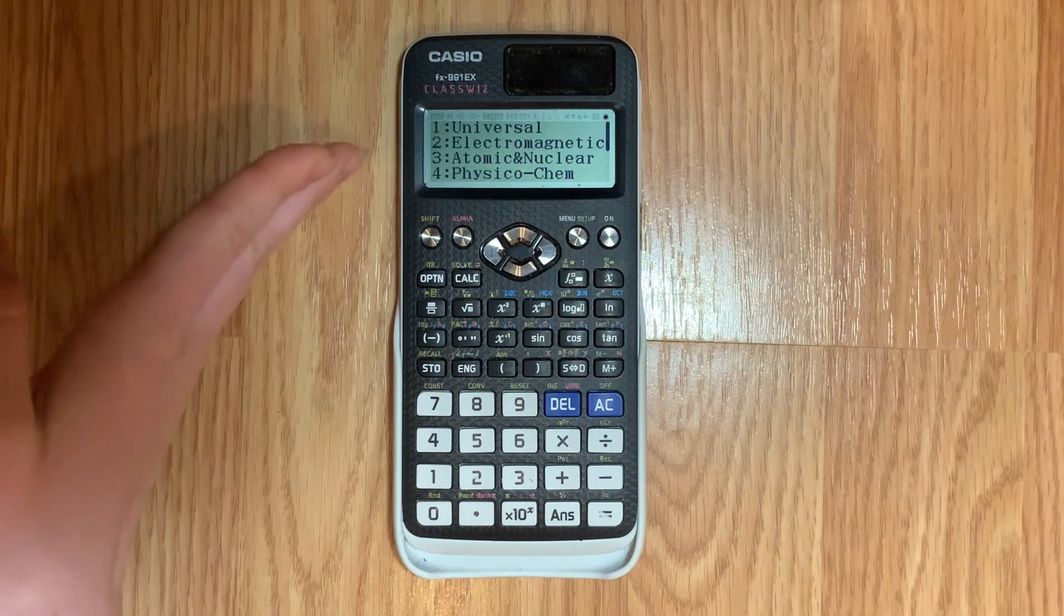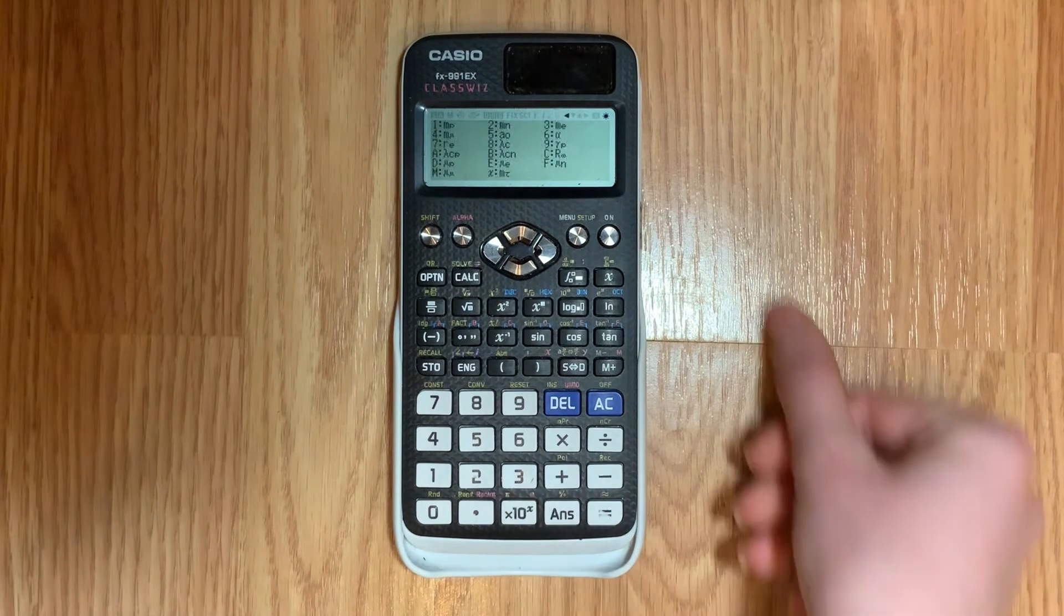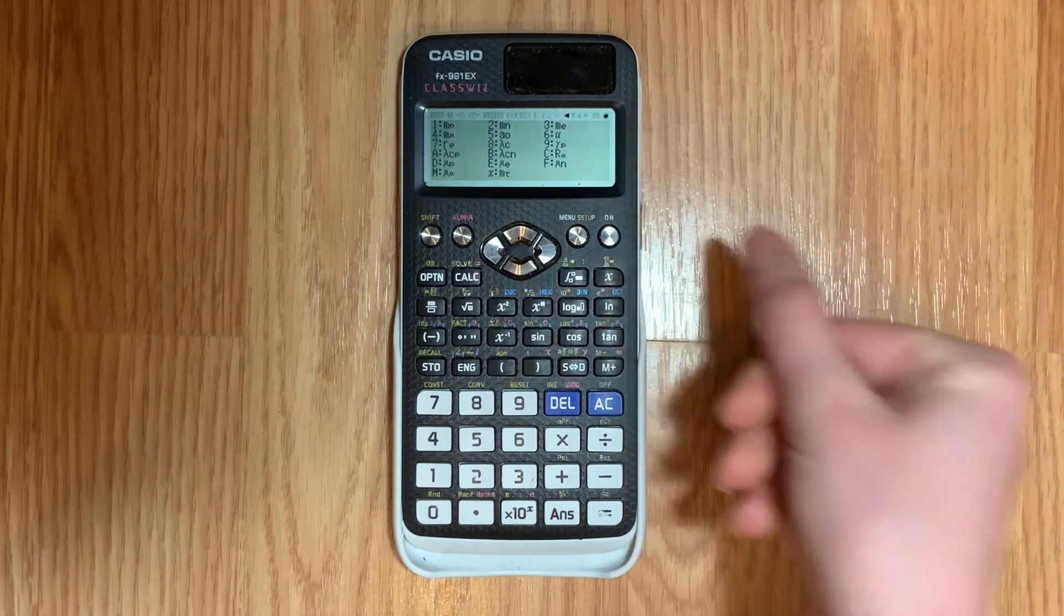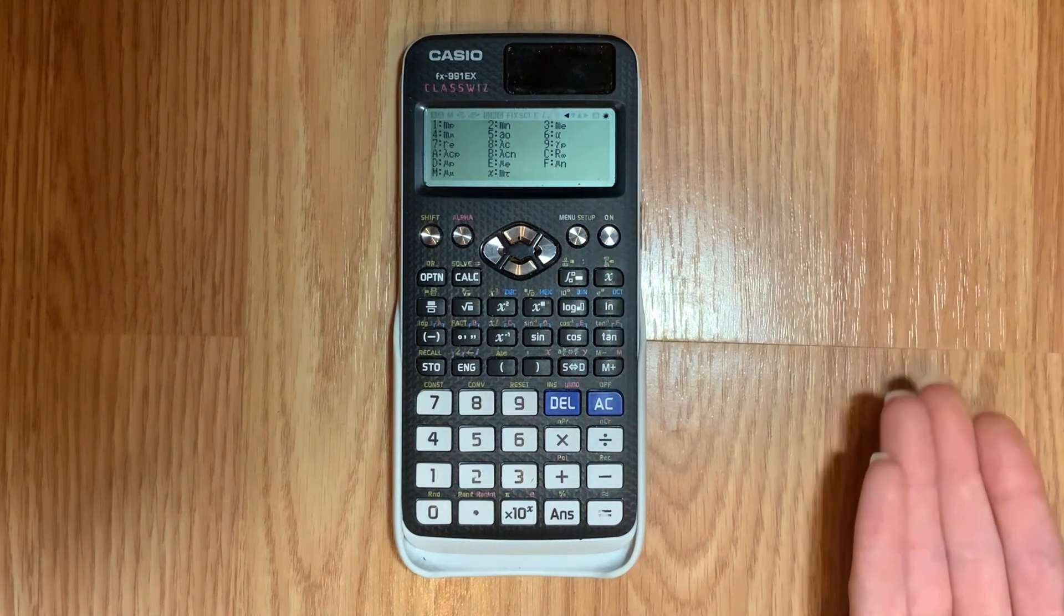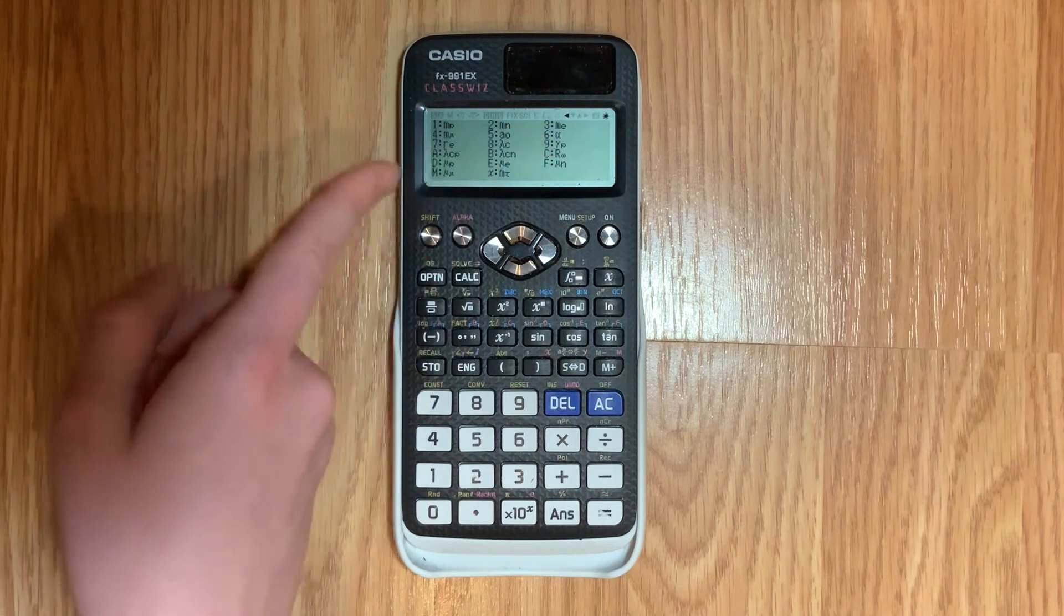So next we have atomic and nuclear and to access that you'll push number three. These are all the atomic and nuclear constants. There are a lot and as you'll notice there are so many that you run out of numbers and it starts giving you letters.